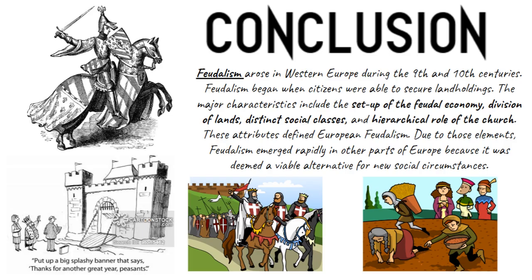Feudalism arose in Western Europe during the 9th and 10th centuries and began when citizens were able to secure landholding. The major characteristics include the setup of the feudal economy, division of lands, distinct social classes, and hierarchical role of the church. These attributes defined European feudalism. Due to these elements, feudalism emerged rapidly in other parts of Europe because it was deemed a viable alternative for new social circumstances.